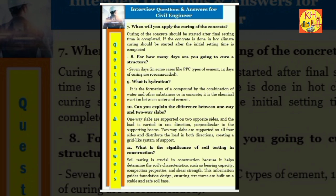Question 10: Can you explain the difference between one-way and two-way slabs? One-way slabs are supported on two opposite sides and the load is carried in one direction perpendicular to the supporting beams. Two-way slabs are supported on all four sides and distribute the load in both directions, creating a grid-like system of support.